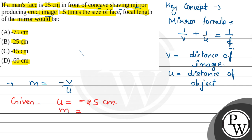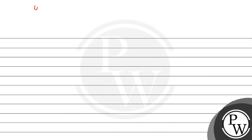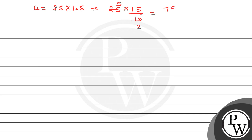Magnification M is given as 1.5 times. Using the magnification formula M equals minus V divided by U: minus V divided by minus 25 equals 1.5. The two negatives cancel, so V equals 25 into 1.5, which is 25 into 15 divided by 10, giving us 75 divided by 2 cm. This is the value of V, the distance of the image.